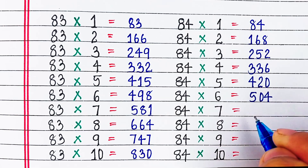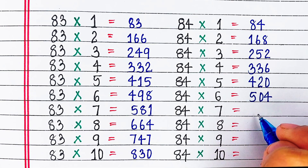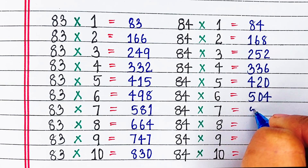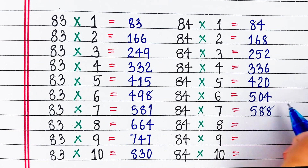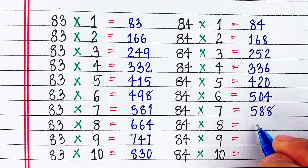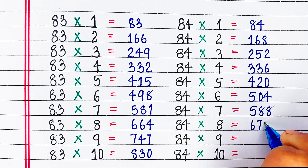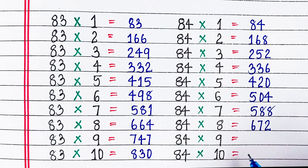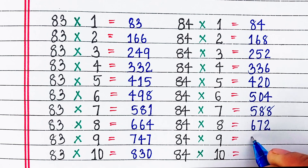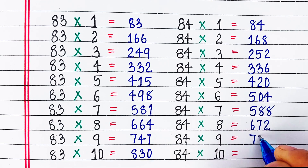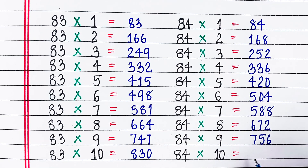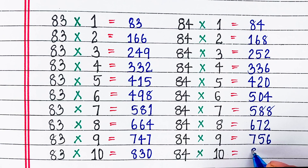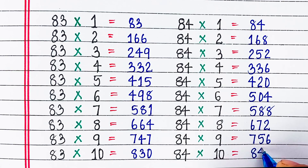84 6s are 504, 84 7s are 588, 84 8s are 672, 84 9s are 756, 84 10s are 840.